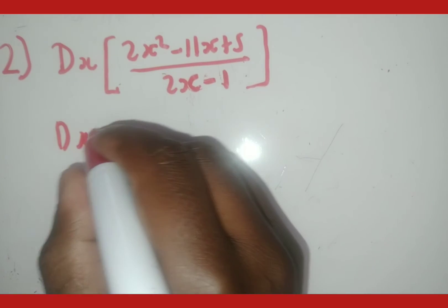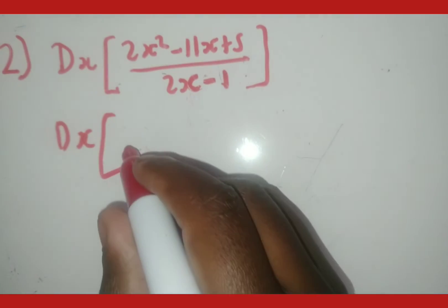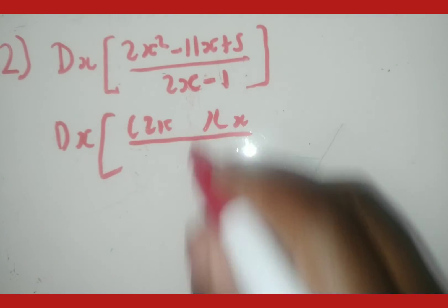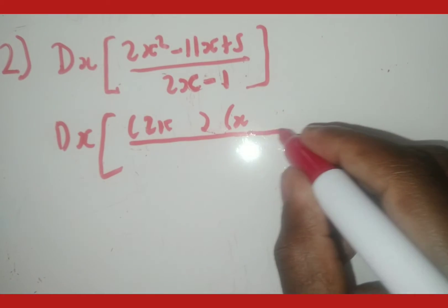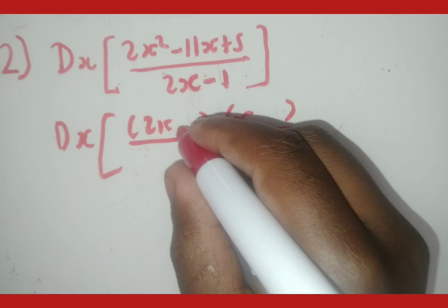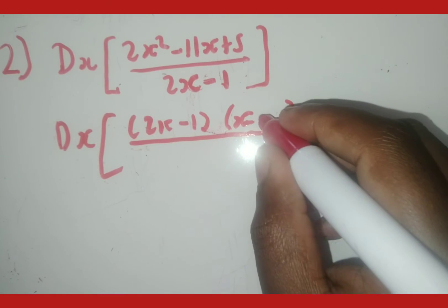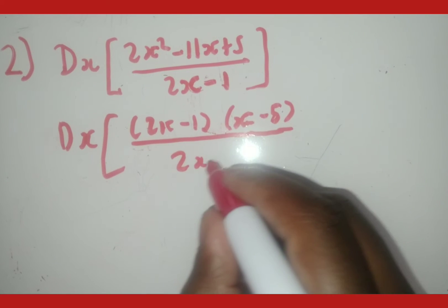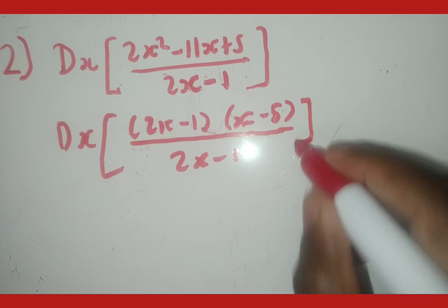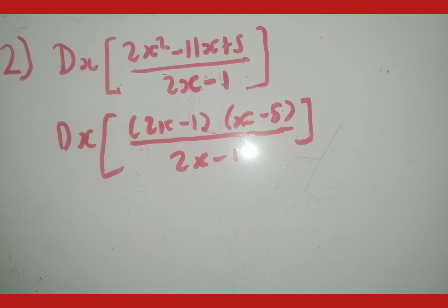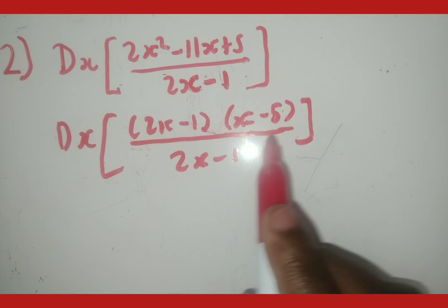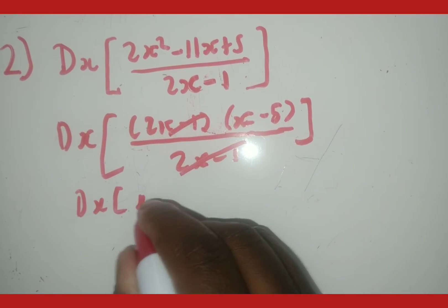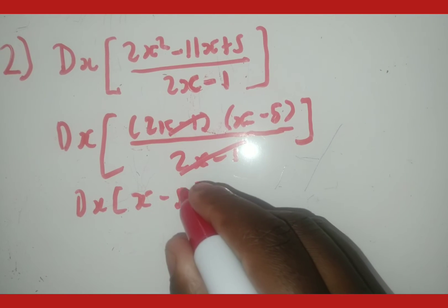Let's factorize. I'm still keeping the dx because I'm not deriving — I'm just manipulating. So the denominator factorizes to give (2x minus 1)(x minus 5). Just as in trigonometry, our goal whenever we factorize is to cancel. These two matching factors cancel, and we're left with x minus 5. Notice the dx is still there because I didn't yet derive — I only factorized and cancelled.